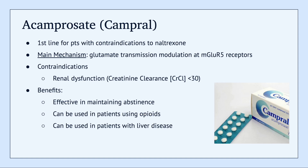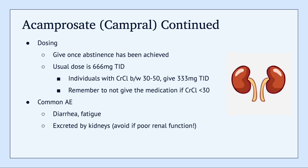We'll move on to acamprosate, brand name Campral. This is the first choice for patients who have contraindications to naltrexone. This medication works by glutamate transmission modulation at the mGluR5 receptor. The main contraindication is renal dysfunction, generally defined as a creatinine clearance less than 30. Benefits include that it is effective in maintaining abstinence, it can be used in patients using opioids, and it can also be used in patients with liver disease. You want to give it once abstinence has been achieved — compare this to naltrexone, which can be taken even while the patient is drinking. The usual dose is 666 mg TID. If a patient has a creatinine clearance between 30 to 50, give a lower dose of 333 mg three times a day. Common adverse effects include diarrhea and fatigue, and this medication is contraindicated in poor kidney function because it is excreted by the kidneys.